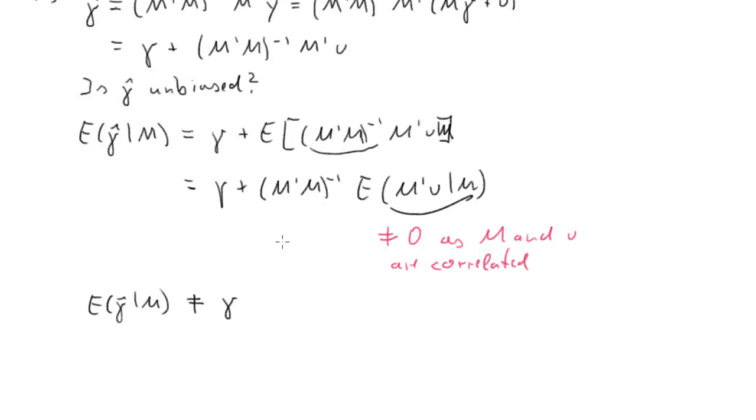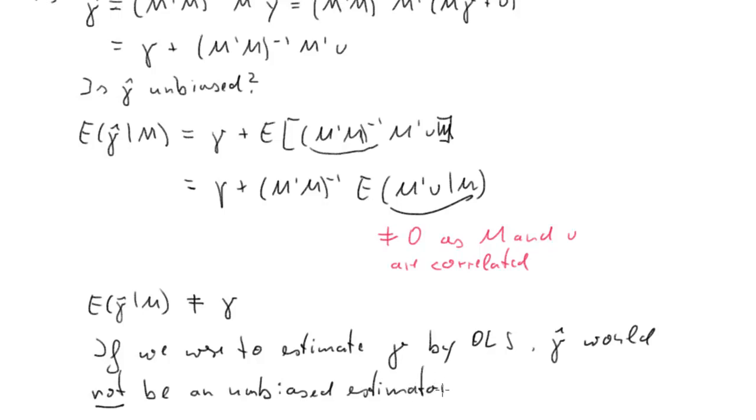And that implies that the expected value of gamma hat conditional on M is unequal to gamma. So, and therefore, if we were to estimate gamma by OLS, gamma hat would not be an unbiased estimator. That is part A solved.